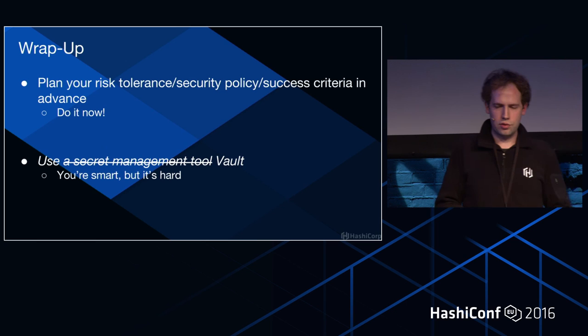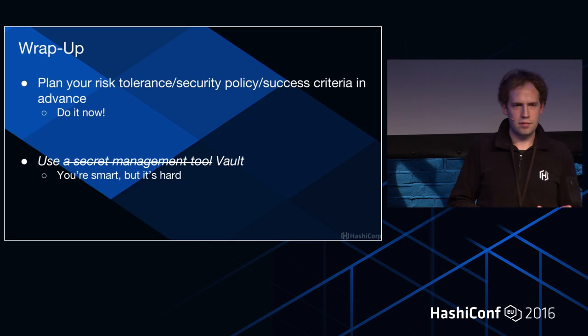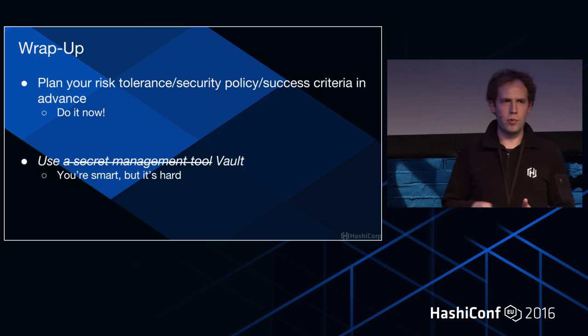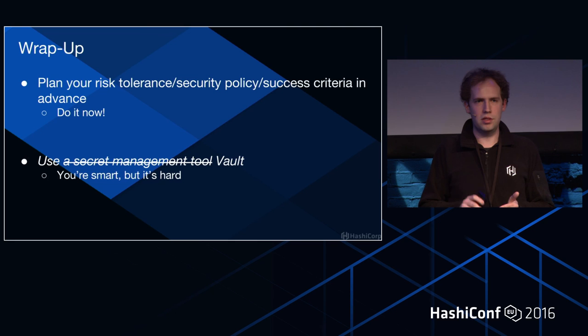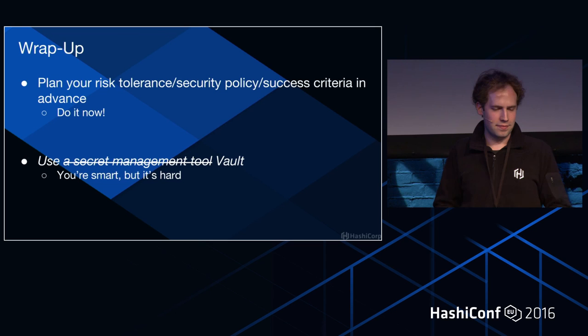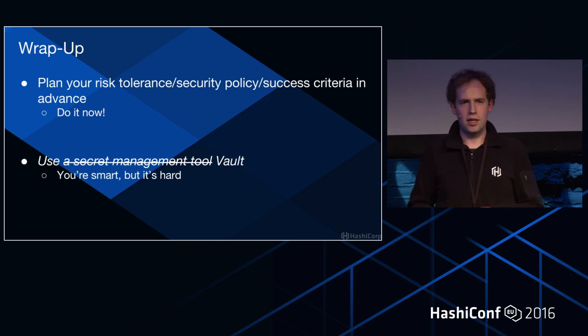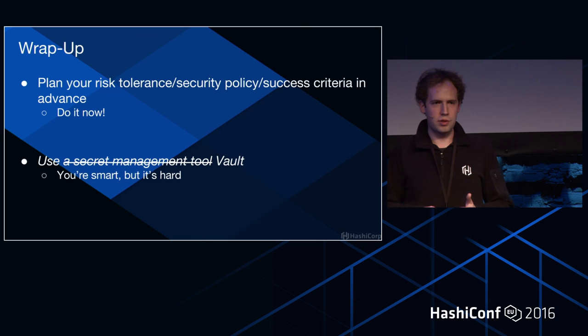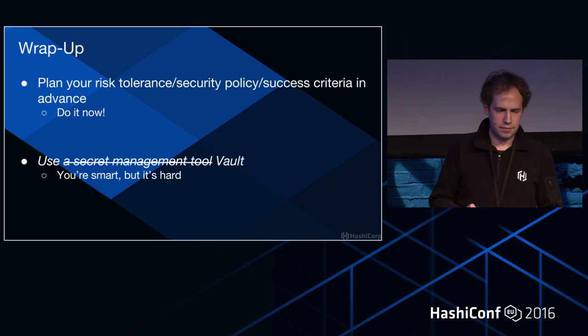As a quick wrap-up: plan your risk tolerance, security policy, and success criteria in advance. Whether you're using Vault or something else, the sooner you do it the better — you need to know what workflows you need, how to implement them, and what to do if there's unauthorized access. Use a secret management tool, ideally Vault — it provides all these security primitives that enable this workflow. Just like you wouldn't write your own crypto, trust the secret management tool and don't try to roll your own. It's very difficult. Questions?